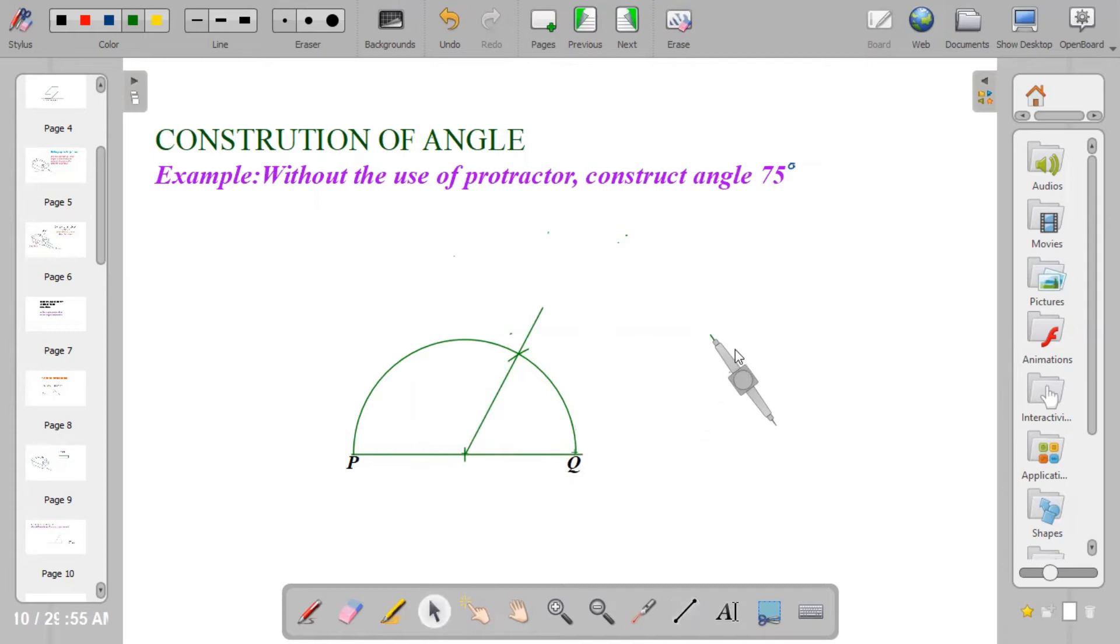Then we need to construct angle 90 degrees. But before you can do that, you're not going to use the same radius. You need to extend the radius of your compass.